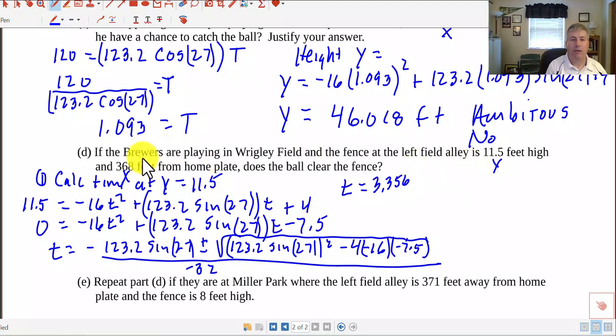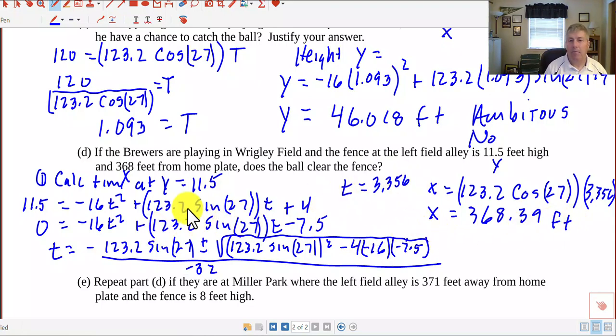So that's the second time that it's at 11.5 feet. So now, I want to see how far it is from home plate when it's 11.5 feet high. By putting that time in to my X equation, then I can see how high it is. So I get X equals 123.2 and this is an X, so it's the cosine of 27 and all that times 3.356. So I multiply all that by 3.356, I get X equals 368.39 feet. So at that time, when it's 11.5 feet high, it's at 368.39 feet, which is just beyond home plate. So it does appear that this is high enough to be a home run if the fielder does not rob the batter of that home run. So yes, it's a home run pending a great defensive play.